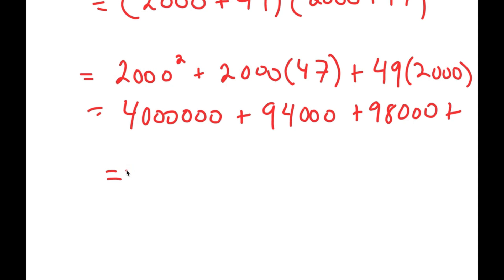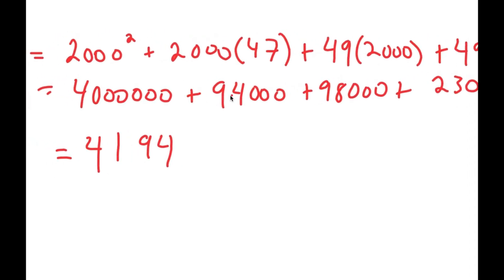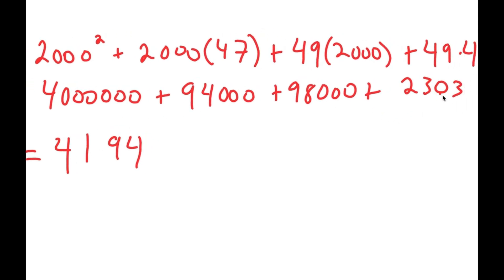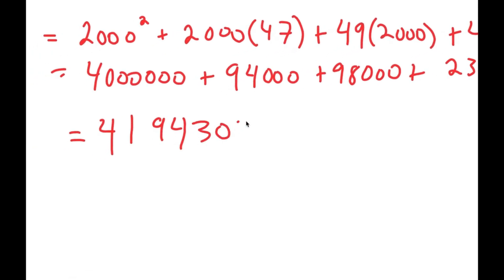Now, 2000 squared is 4 million, plus 47 times 2000 is 94,000, plus 49 times 2000 is 98,000, and finally 49 times 47 is 2303. By adding all these up, I get 4,000,194,000 — because 94,000 plus 98,000 is 194,000 — and then adding the 2,303 gives 303 at the end.